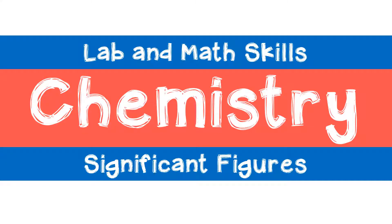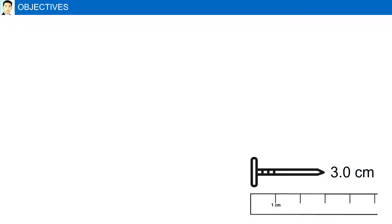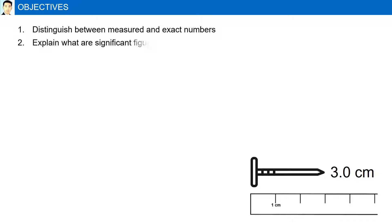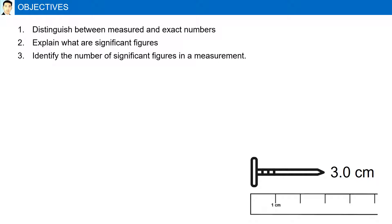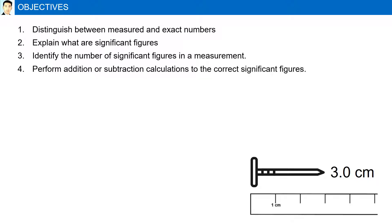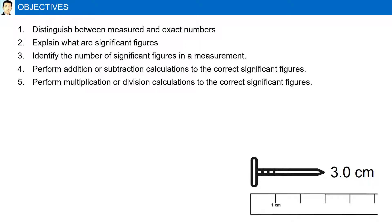Significant figures. Objectives: Distinguish between measured and exact numbers. Explain what are significant figures. Identify the number of significant figures in a measurement. Perform addition or subtraction calculations to the correct significant figures. And finally, perform multiplication or division calculations to the correct significant figures.